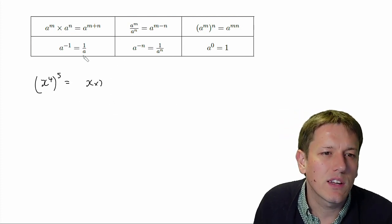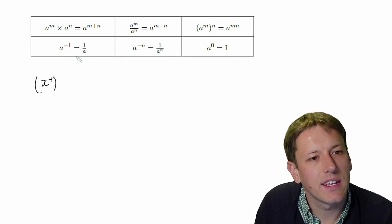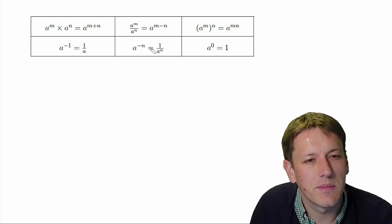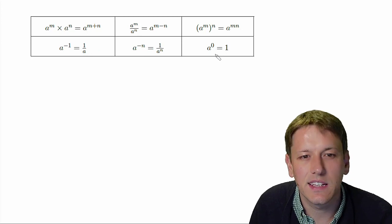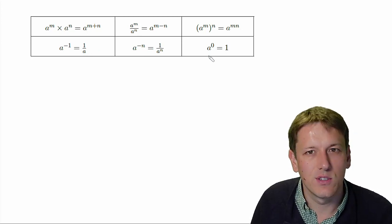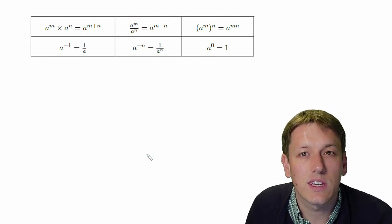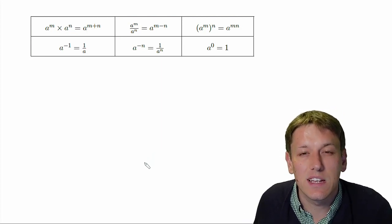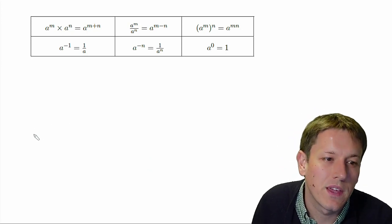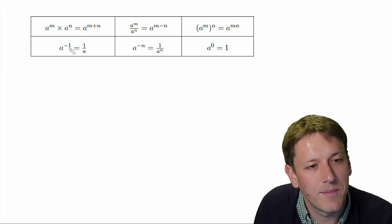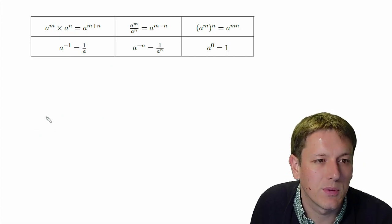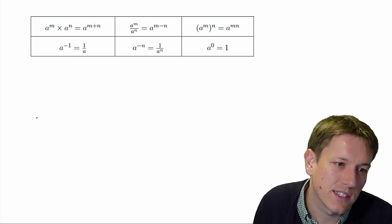Now, if we look at the next rules: A to the minus one is 1 over A, A to the minus N is 1 over A to the N, and A to the zero equals 1. We're going into negative indices, and people do find these quite confusing — I think it's because we don't always think about where these come from. So let's work out why these rules are true, and I think that will really help you understand these better.